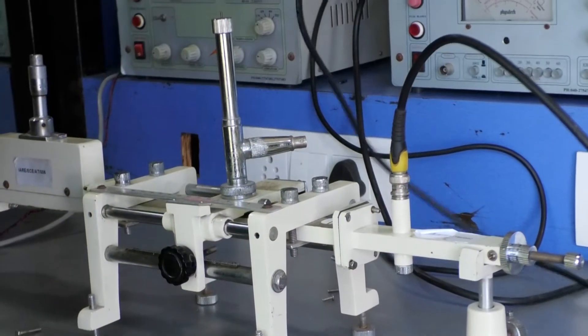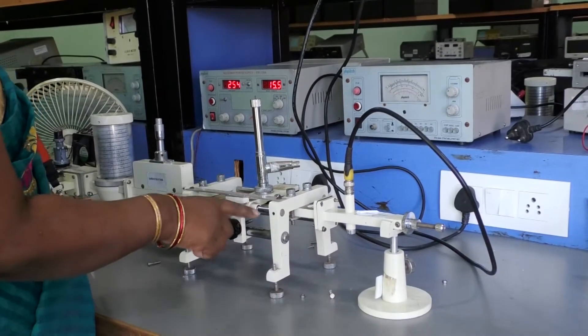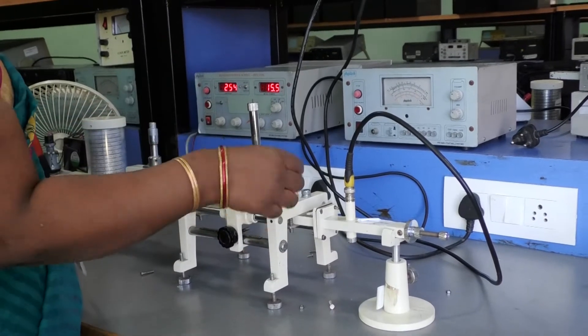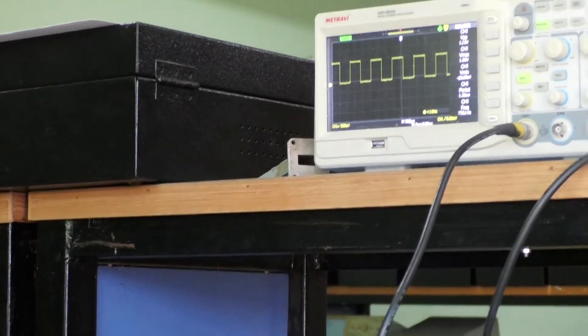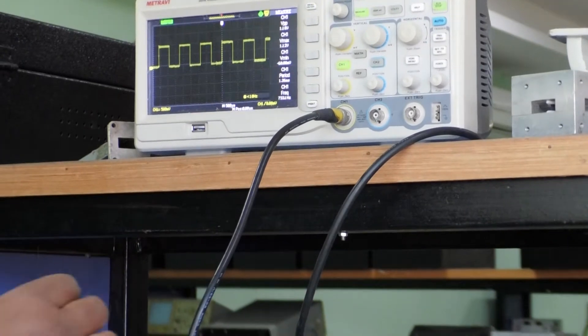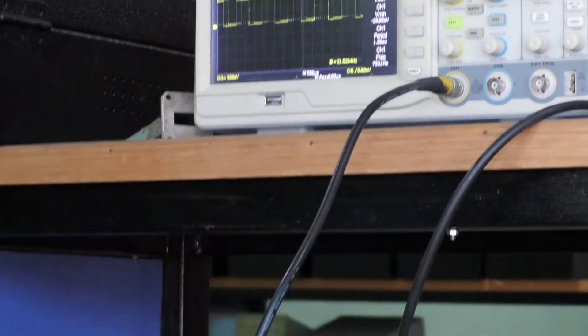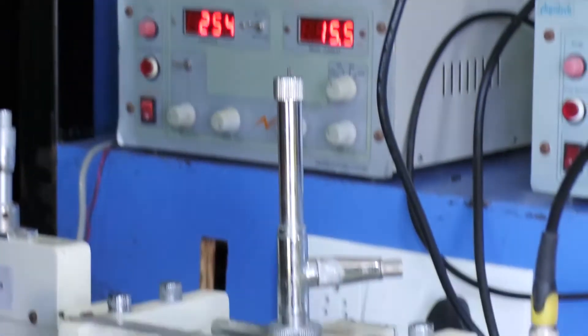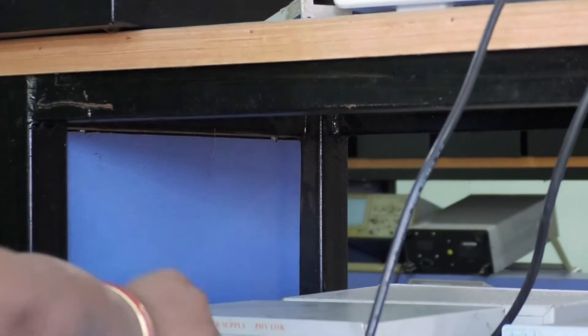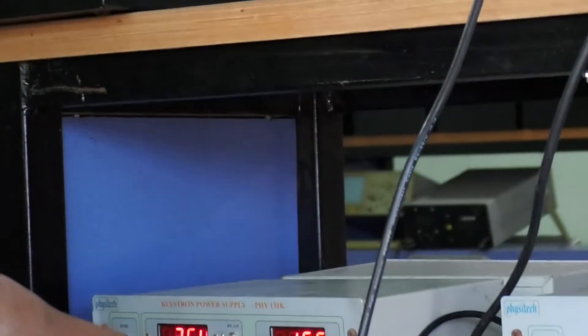Before doing the experiment we have to energize the microwave bench setup. We have to check whether the microwave bench produces square wave pattern or not. To check the square wave pattern we have to connect the CRO probe between the detector mount and CRO. Next, by varying the repeller voltage we have to get maximum amplitude of CRO. To get the maximum amplitude we can increase the amplitude knob or the mode frequency section.